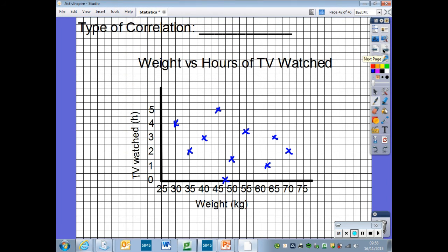Our next scatter graph shows the weights of 10 children, which were measured and plotted against the number of hours they watch TV in a day. We want to try and draw a line of best fit on the graph to see if there's a correlation. But as you can see, these points are just random. There is no line of best fit. The crosses have no direction, so there's no link, and we say that there is no correlation.